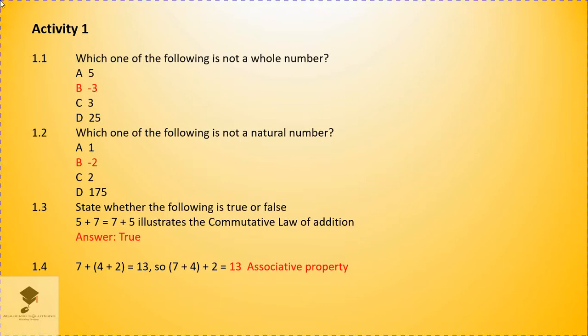But then, all these numbers, I mean, answer A, answer C, and answer D, they are all above 0. And then we only have B, which is below 0. And remember what we said about whole numbers? They can be less than 0. So, minus 3, B, is our answer.